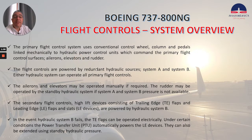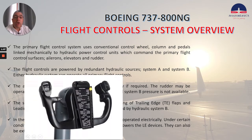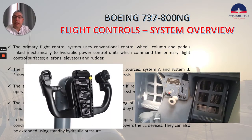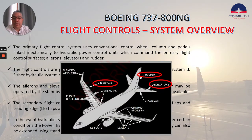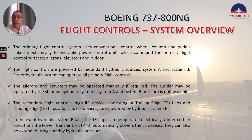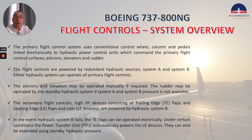Now let's talk about the system overview. The primary flight control system uses conventional control wheel, column, and pedals linked mechanically to hydraulic power control units, which command the primary flight control surfaces: ailerons, elevators, and rudder. The flight controls are powered by redundant hydraulic sources, system A and system B. Either hydraulic system can operate all primary flight controls. The ailerons and elevators may be operated manually if required.